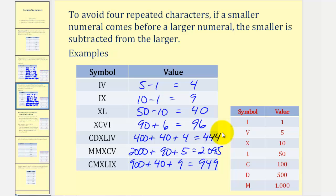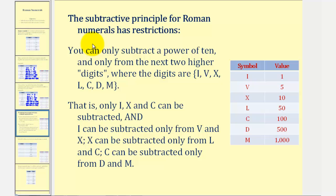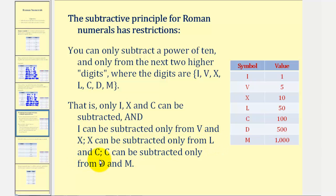Now, the subtraction principle can be a little tricky, because there are restrictions on the subtractive principle for Roman numerals. You can only subtract a power of ten, and only from the next higher digits, where the digits are I, V, X, L, C, D, and M. That is, only I, X, and C can be subtracted. I can be subtracted only from V and X, X can only be subtracted from L and C, and C can only be subtracted from D and M. So the subtraction principle can get a little tricky.